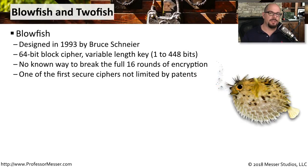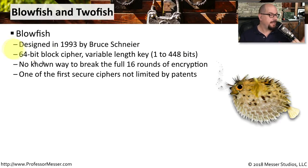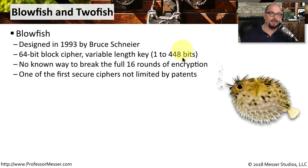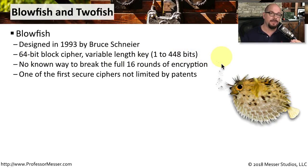One of the challenges with some encryption standards is that their use is limited by patents. That's why Blowfish was created in 1993 — to remove this patent limitation. Blowfish uses a 64-bit block cipher with a variable-length key anywhere between 1 and 448 bits long. It is a very powerful cipher, and there is no known way to break the full 16 rounds of encryption used with Blowfish.